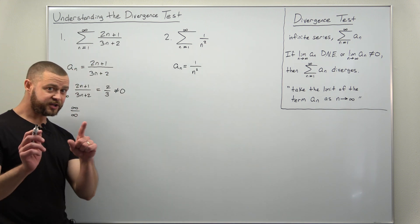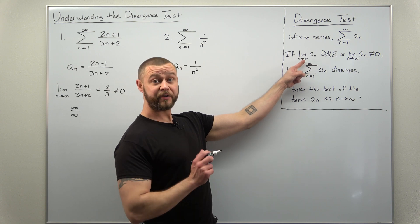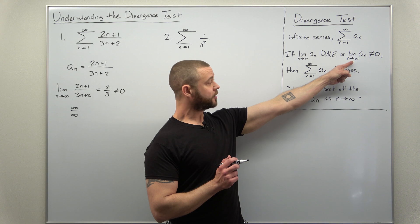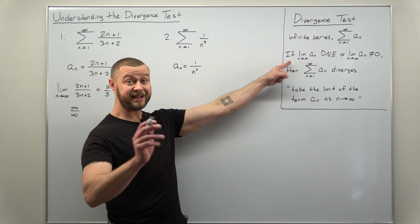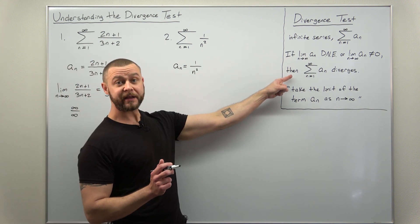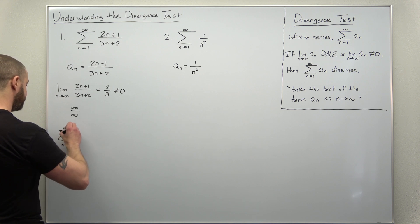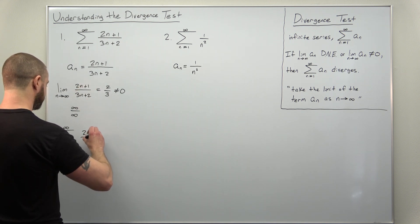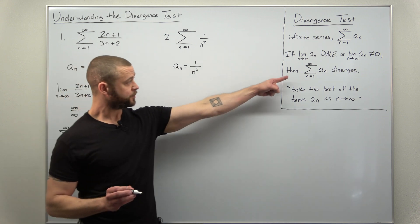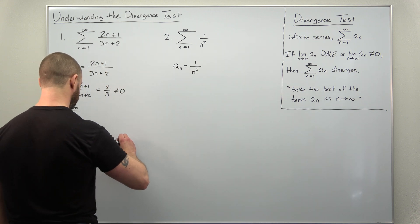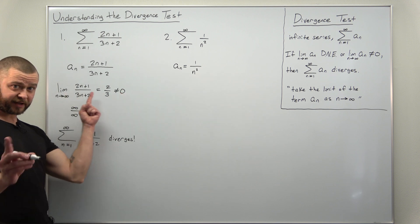Now let's check our conditions from the divergence test — either the limit of the term does not exist, or the limit of the term is non-zero. We found our limit is two-thirds, which is non-zero, so the conditions are met. We get the conclusion: the infinite series from one to infinity with term (2n + 1) / (3n + 2) diverges, because the conditions of the divergence test are satisfied.